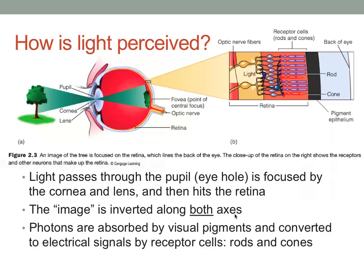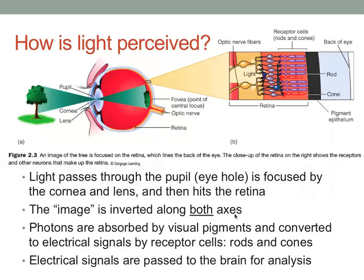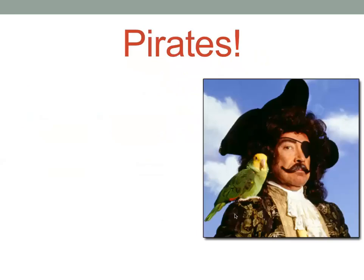When the image hits the back of your eyeball — the retina — photons of light, this light energy, is absorbed by visual pigment cells and converted into electrical signals by receptor cells called rods and cones. That's what sends the electrical energy to the rest of your brain so you can process the visual stimulus. These signals are then further analyzed.